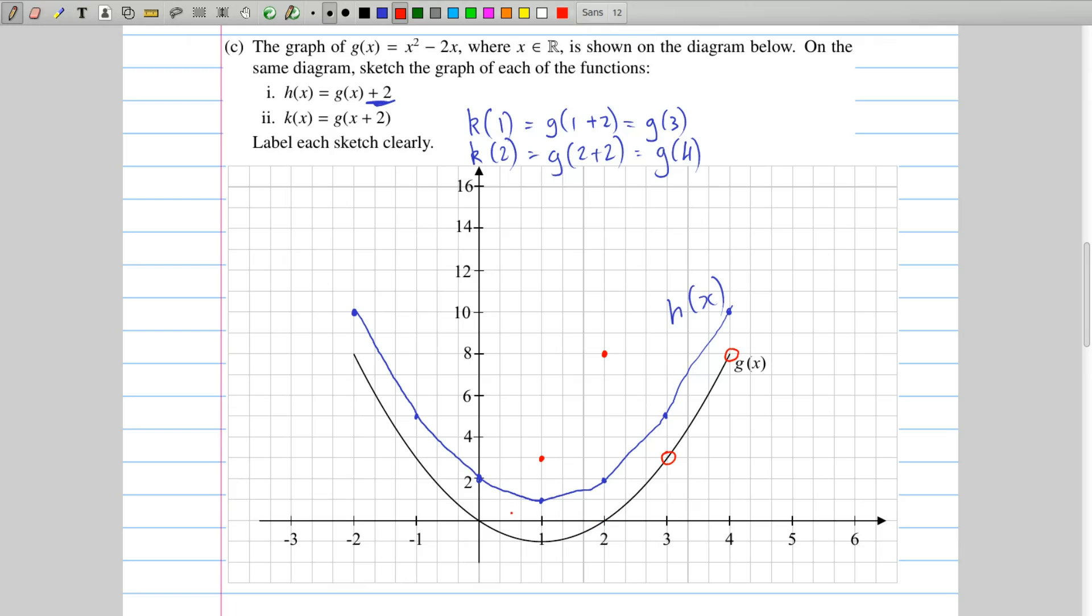And so we can continue this pattern. So there's k of 0. It's the same as g of 2. Looks like k of minus 1 is the same as g of 1. k of minus 2 is the same as g of 0. k of minus 3 is the same as g of minus 1, which is there. And we can't really go any further to the left, but let's just say minus 4 would be over here. So this is where k would end up. And just projecting that point over there can help us to figure out the shape of the curve near minus 3.